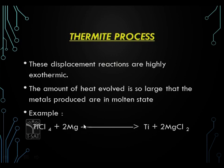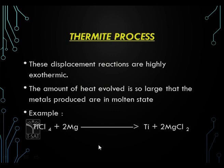For example, titanium chloride reacts with magnesium to liberate magnesium chloride. Thus the chlorine impurity is removed as magnesium chloride and pure titanium metal is extracted. Here a displacement reaction takes place: more reactive magnesium displaces less reactive titanium, and thus titanium metal is extracted from its ore, titanium chloride.